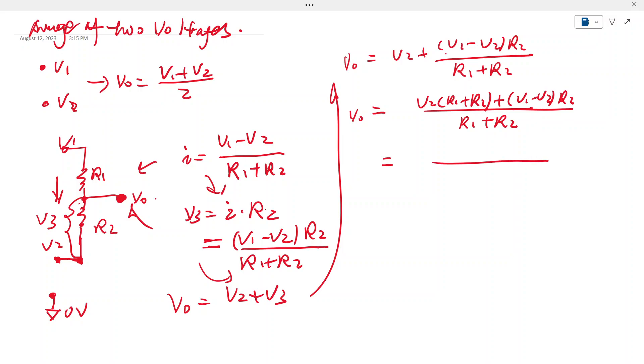So we have V2 times R1 plus R2, plus V1 minus V2 times R2, all over R1 plus R2. Let's simplify this. V2 R1 plus V2 R2 plus V1 R2 minus V2 R2.